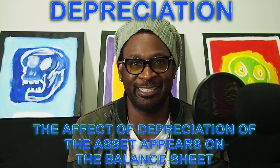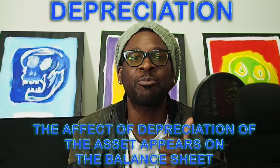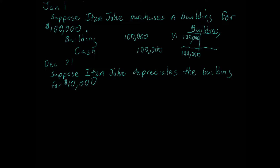This process shows up on the balance sheet, and so we're going to illustrate how to properly record depreciation and how it shows the effect on long-term assets on the balance sheet. Let's take it to the board. We are now going to look at an example of how to appropriately depreciate an asset and how it appears on the financial statements. On January 1st, suppose IsAJoke purchases a building for one hundred thousand dollars.